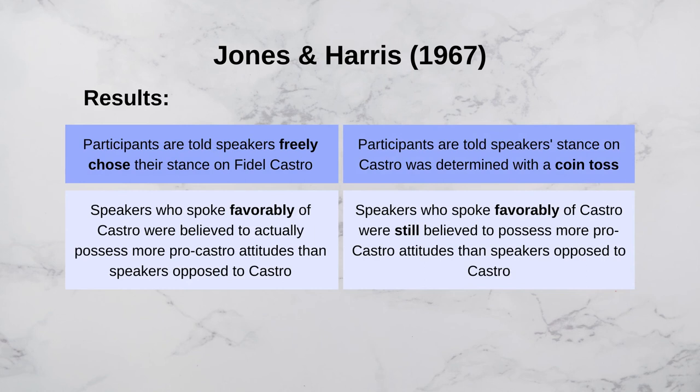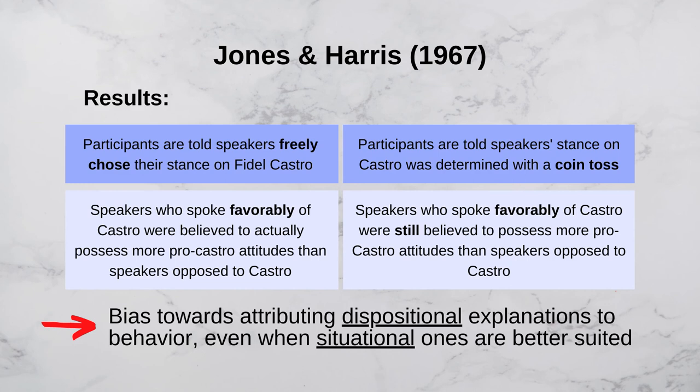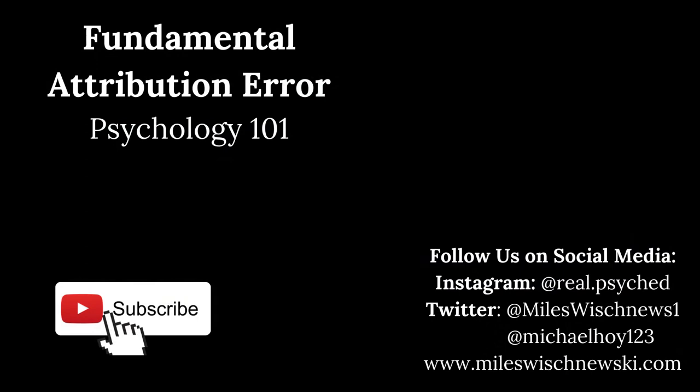Interestingly, however, when participants were told that the stance they took in their speeches was determined with a coin toss, participants on average still inferred that the pro-Castro speakers had more positive attitudes towards Castro compared to the speakers with an anti-Castro stance. These results show that people have a bias towards attributing dispositional explanations for people's behavior even in scenarios where a situational explanation is better suited.